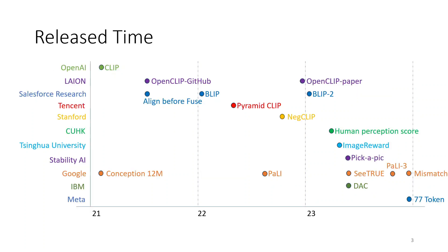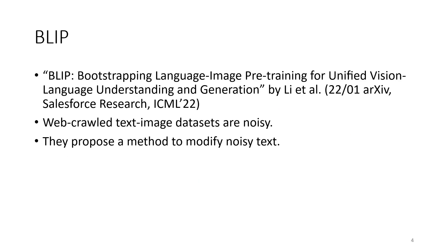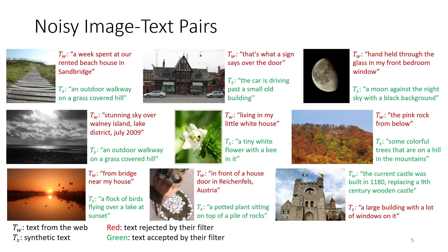After CLIP, someone wanted to improve it, so there is BLIP. When they coined the term BLIP, they tried to mimic CLIP. So the question is: we have like 500 million image-caption pairs crawled from the web, but how about the quality of those captions? It may be a problem. When you take a look at these images, the text from the web — for example, 'week spent at our ranch bench house team somewhere' — does it make sense as a description for the image? Apparently not.